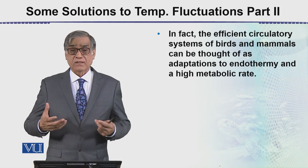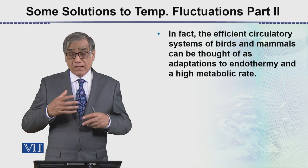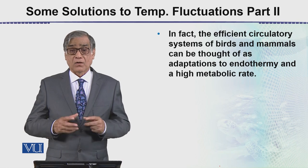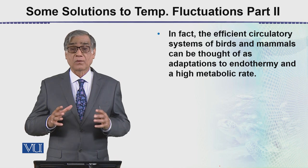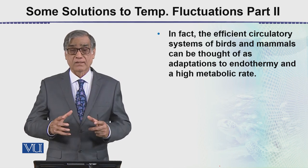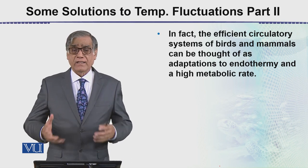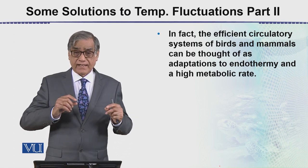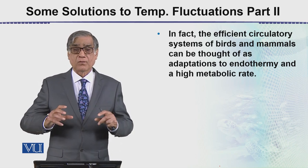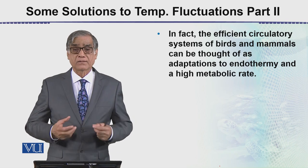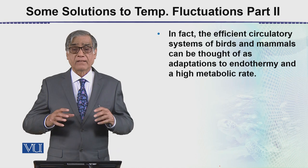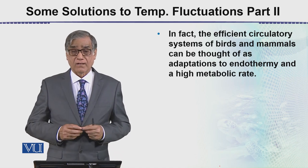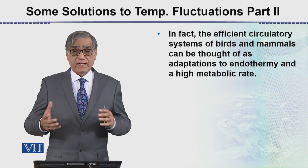The circulatory systems of birds and mammals can be thought of as adaptations to endothermy and high metabolic rate. The respiratory and circulatory systems are well coordinated with the brain. These systems are very efficient in maintaining body temperature, particularly in warm-blooded homeotherms.